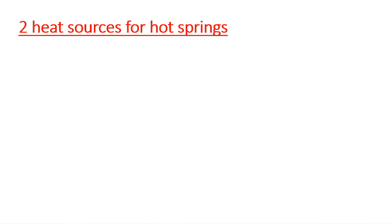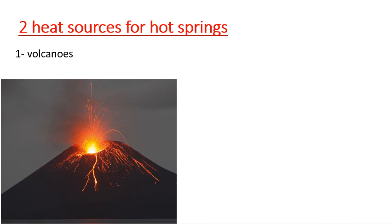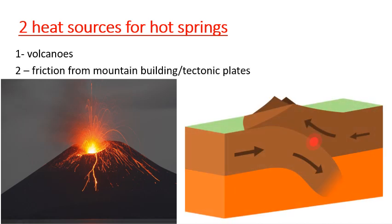This big mound is actually a pile of thousands of years of minerals just being stacked up. The two heat sources for hot springs are: one, volcanoes — doesn't have to be an active volcano, just a dead one with hot rock in the ground — and two, friction from mountain building or tectonic plates.